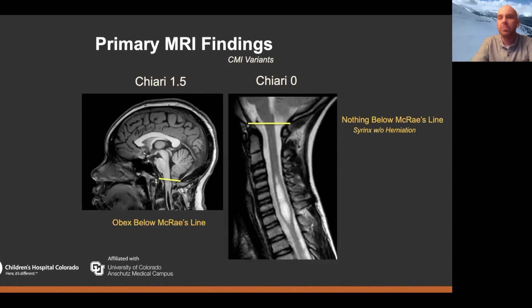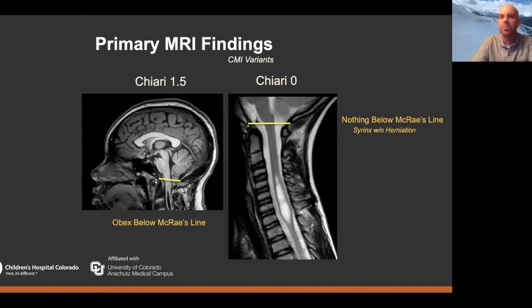Chiari 0 in my experience has been a little bit of a yeti — I don't think I've ever seen a patient with one, and I haven't decompressed one. The concept behind it is that you actually have Chiari-like physiology in a patient who doesn't have herniation of their tonsils. So you have a potentially symptomatic syringomyelia without actual tonsillar herniation, and that can be treated by doing a posterior fossa decompression and opening up potential arachnoid adhesions or something similar that's causing that type of physiology.